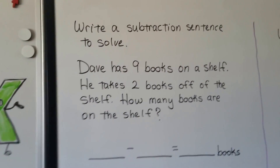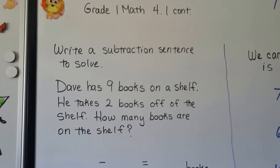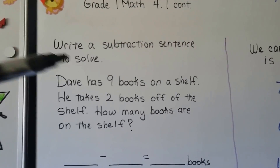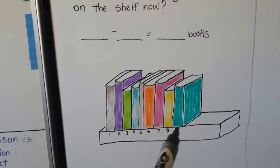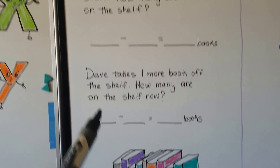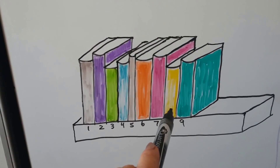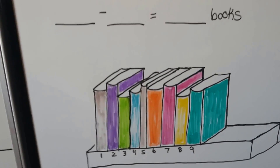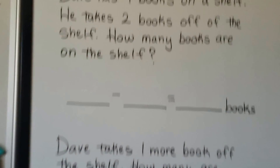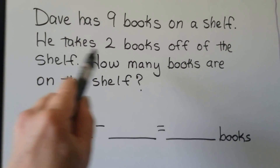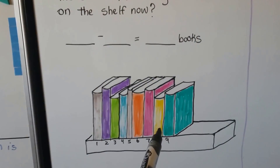We can write a subtraction sentence to solve this problem. Dave has 9 books on a shelf. He takes 2 books off the shelf. How many books are on the shelf? He has 9 books: 1, 2, 3, 4, 5, 6, 7, 8, 9. He takes 2 books off — we take away the green one and the yellow one. Now he has 7. We can write a subtraction sentence: 9 minus 2, and we know there'll be 7.